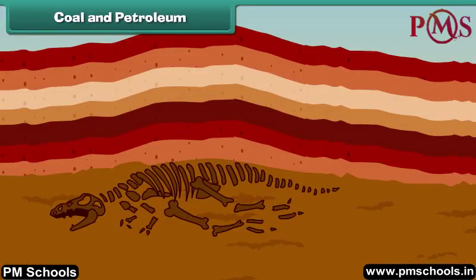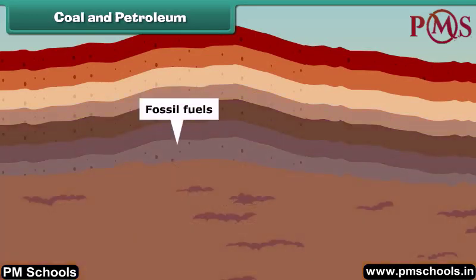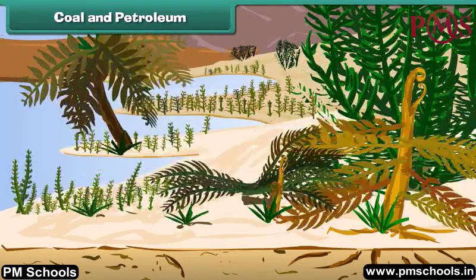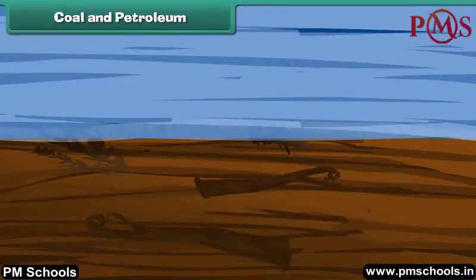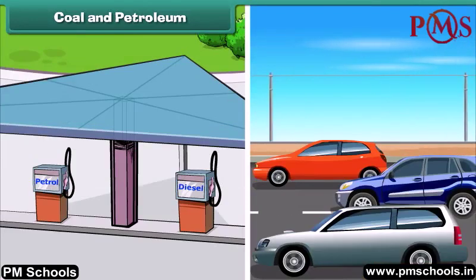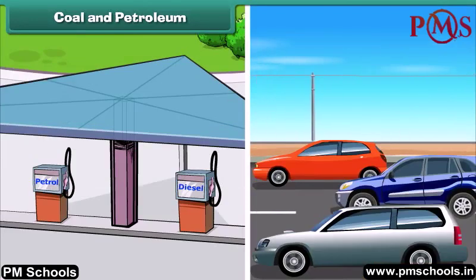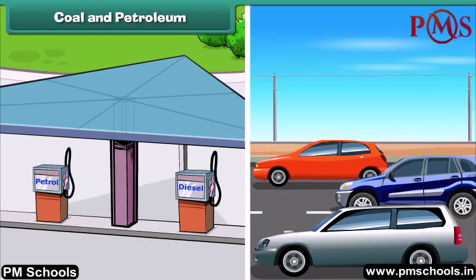Coal and petroleum are fossil fuels which take years to form. They are made from trees which get buried in the soil. They are non-renewable because they are limited in supply and can get exhausted by human overuse.